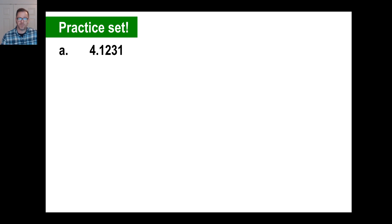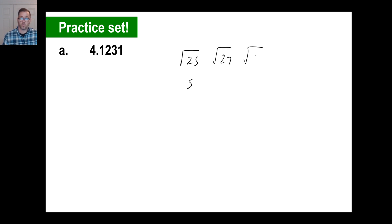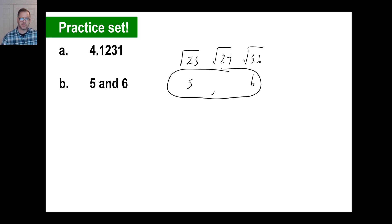For practice problem A, the square root of 17 to 4 decimal places is 4.1231. For B, the square root of 27 — we know the square root of 25 is 5 and the square root of 36 is 6, so the square root of 27 falls between 5 and 6.